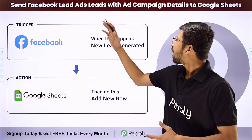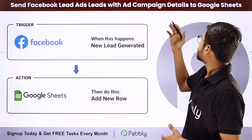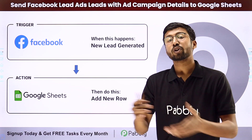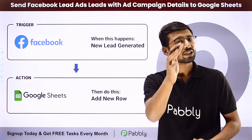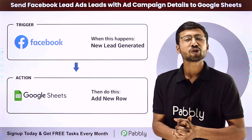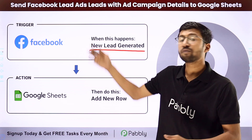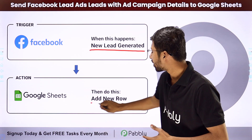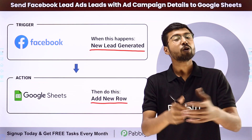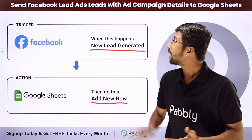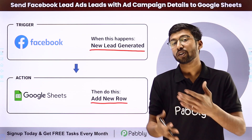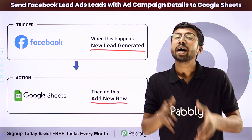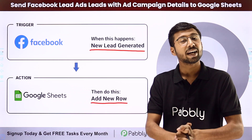In this video, we are going to learn how to send Facebook lead ad leads with ad campaign details to Google Sheet. If you are promoting your business using Facebook lead ads and generating some leads, this automation is for you. Whenever a new lead is generated in your Facebook lead ads campaign, we are automatically going to add the details of that newly generated lead in our Google Sheet — including the details of the ad campaign or ad set, so you know from which campaign each lead came.